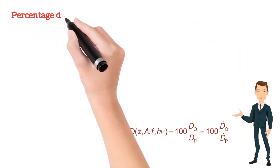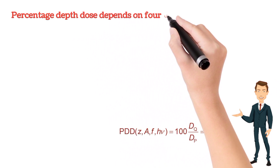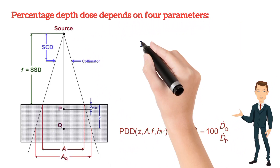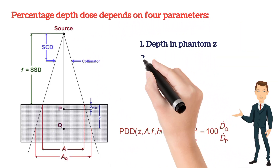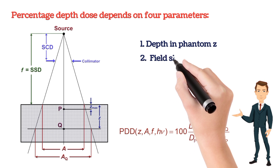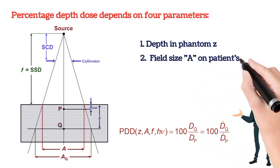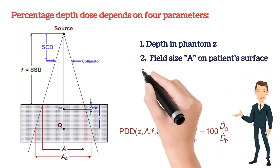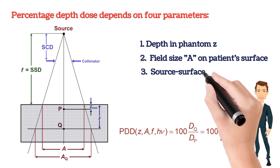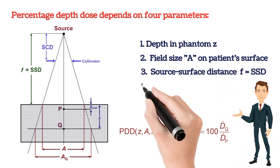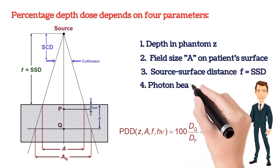PDD depends on four parameters: number 1, depth in phantom; number 2, field size AQ; number 3, SSD; and number 4, photon energy.